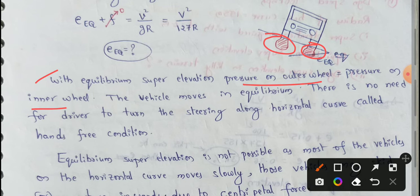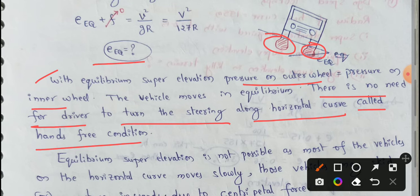The vehicle moves in equilibrium. There is no need for driver to turn the steering along horizontal curve - called hand-free condition. In equilibrium, super elevation pressure on outer wheel equals pressure on inner wheel.